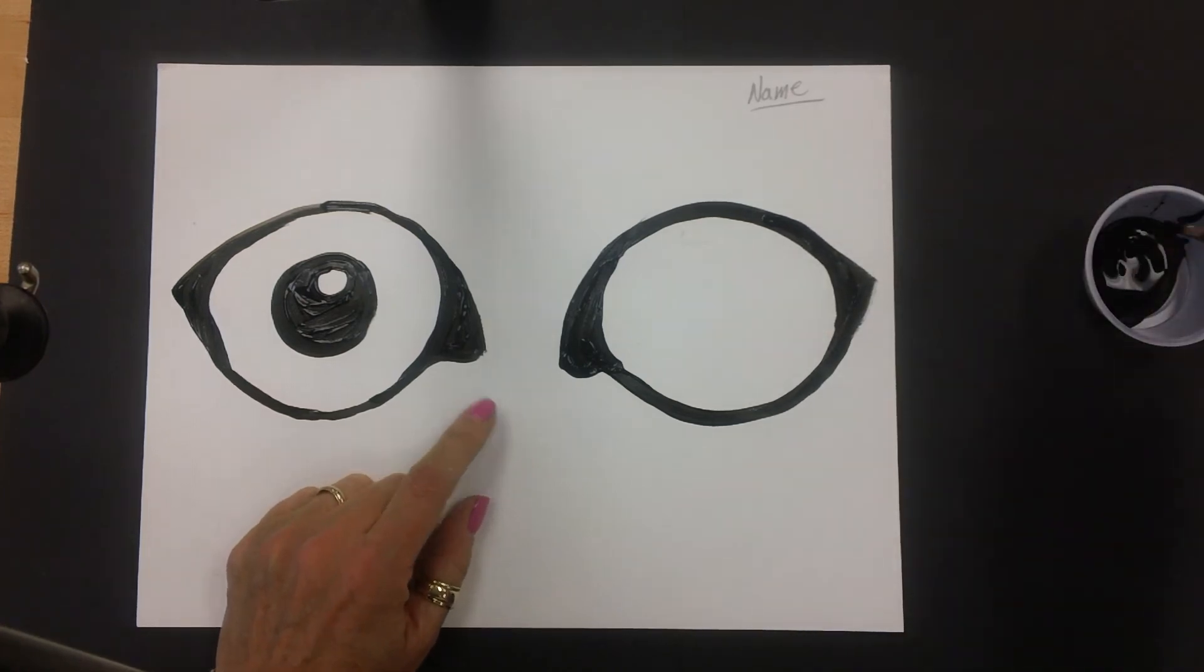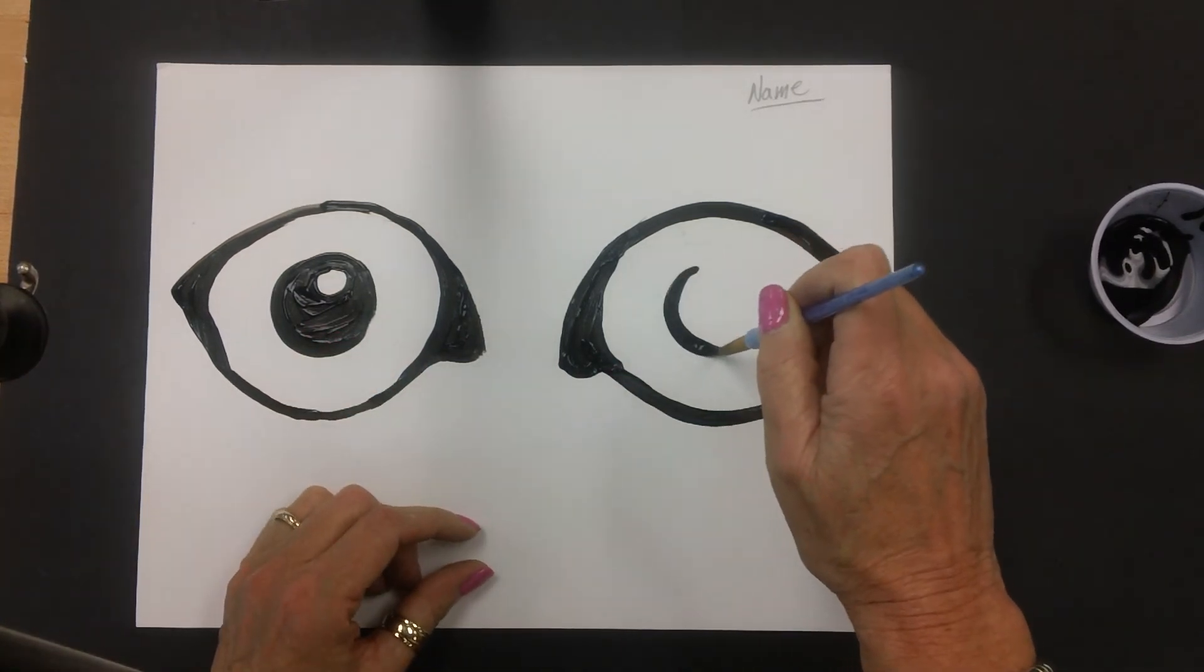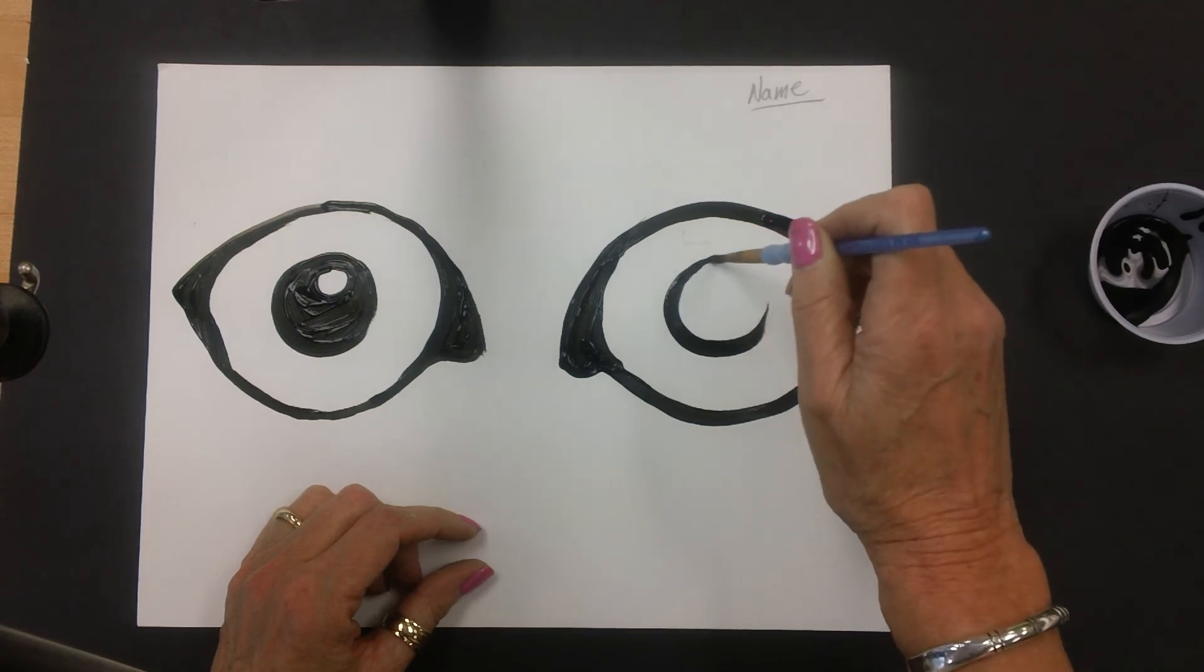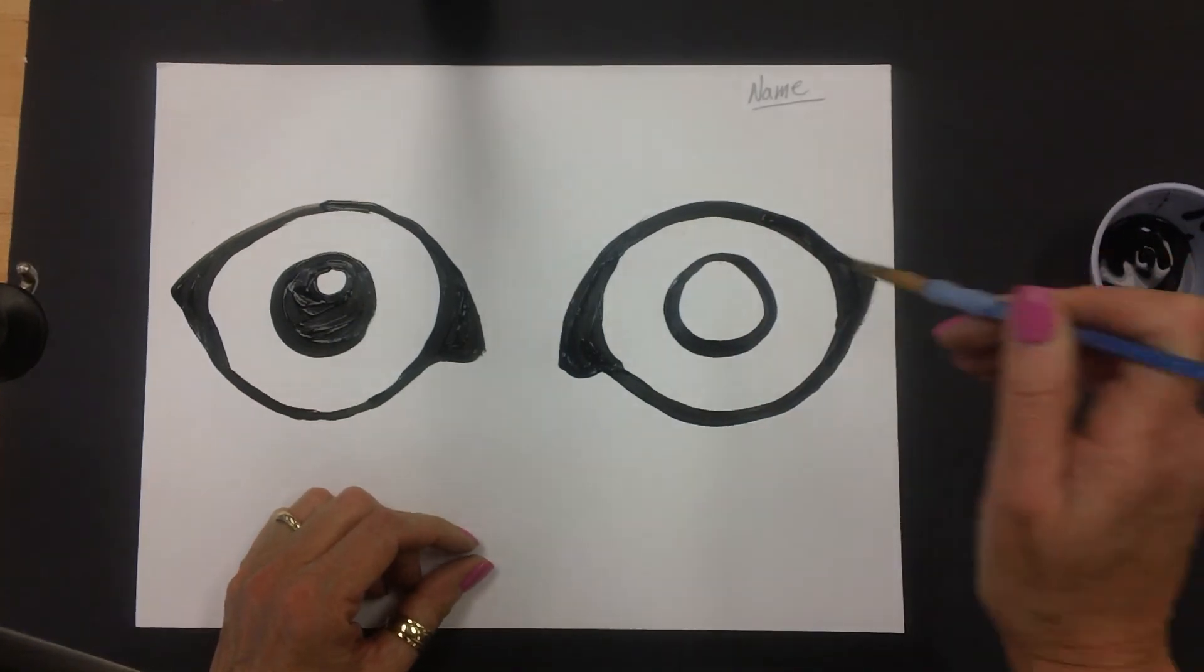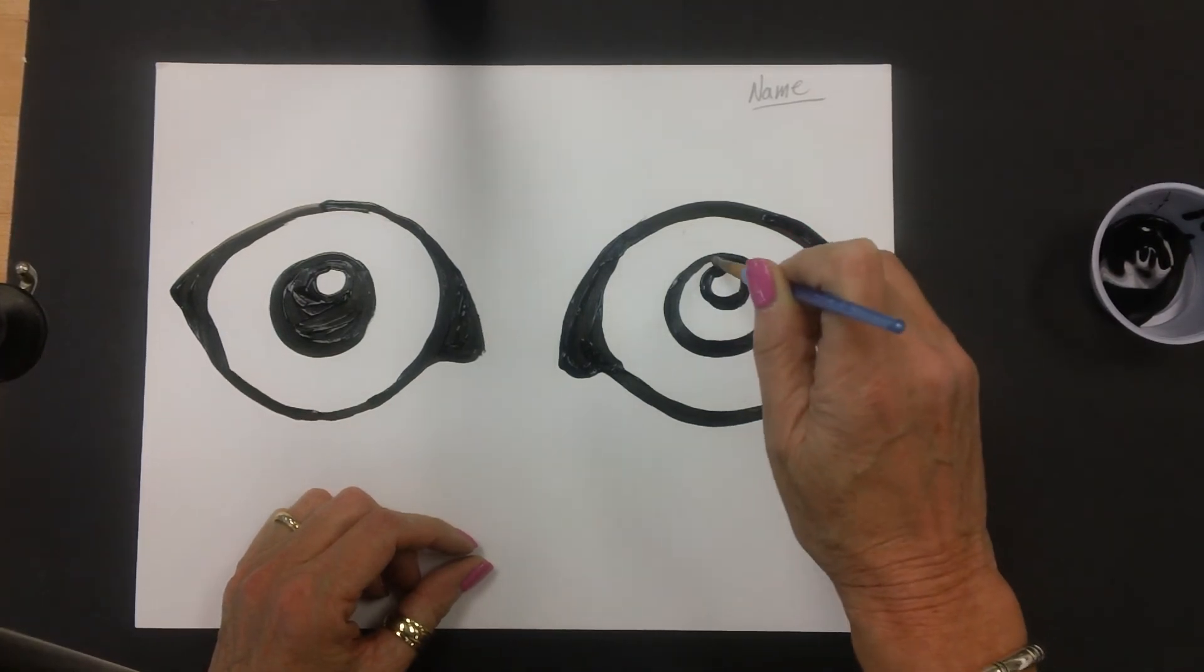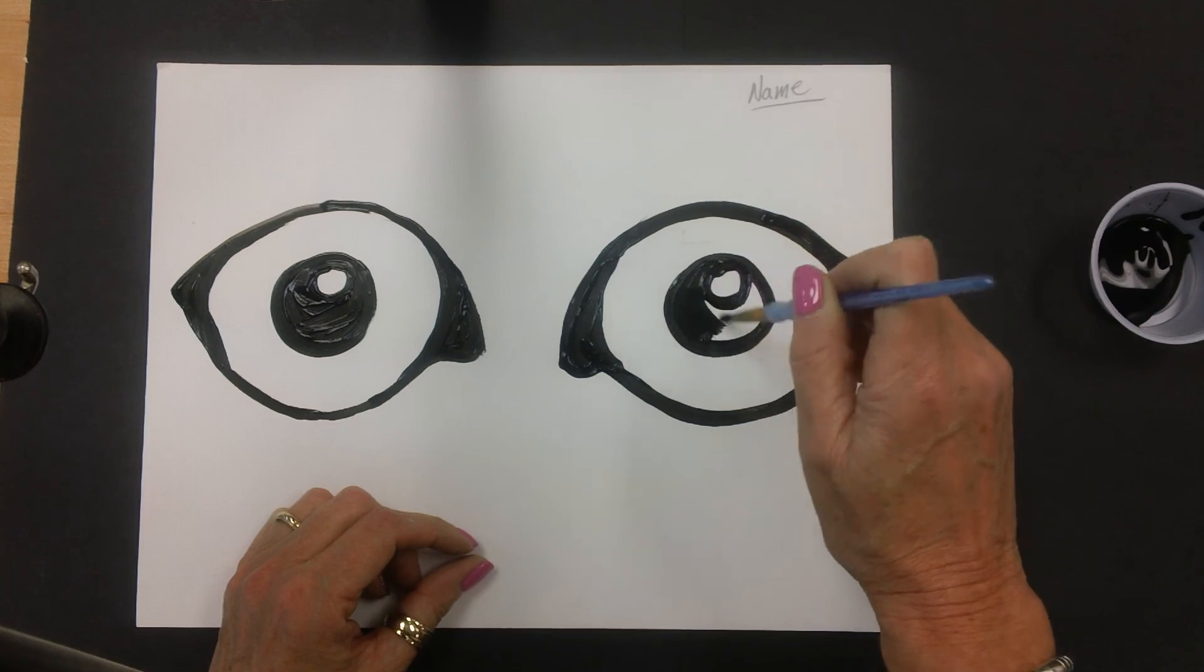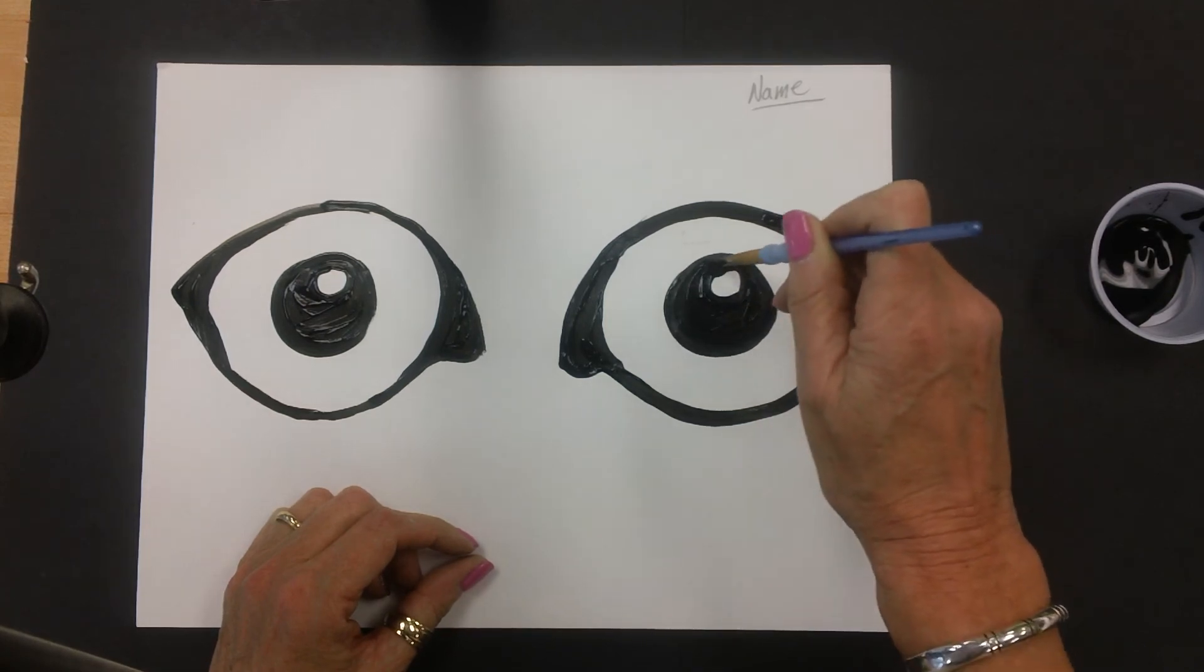Alright. Now, the trick is, I have to make this eye somewhat similar to that one. So I'm just going to do the best that I can. And that's all I ask. And I'm going to make a highlight circle. And then shade that in. Alright.